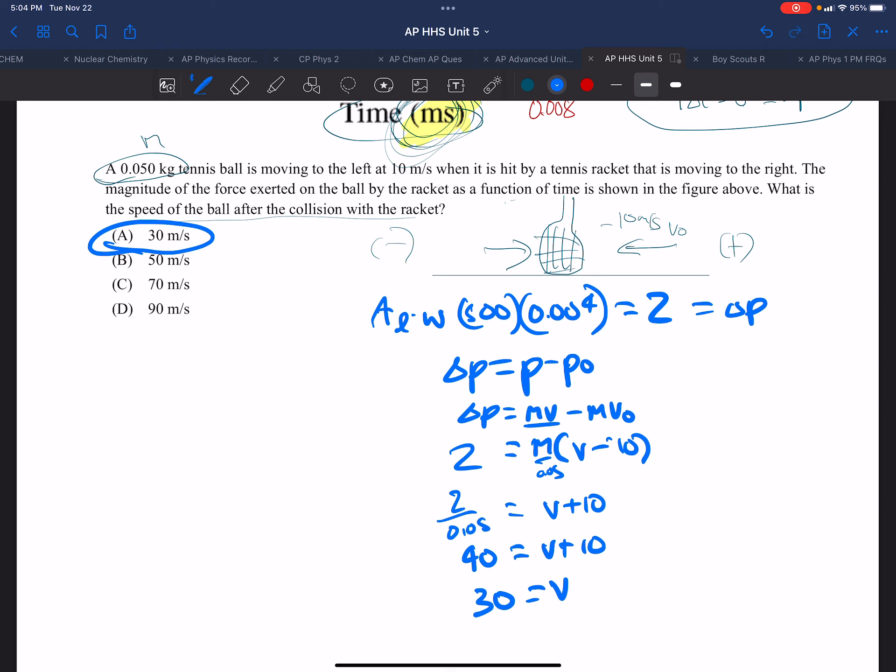Now you can see from the other choices, it would be pretty easy to make a mathematical mistake and arrive at some of the other answers.